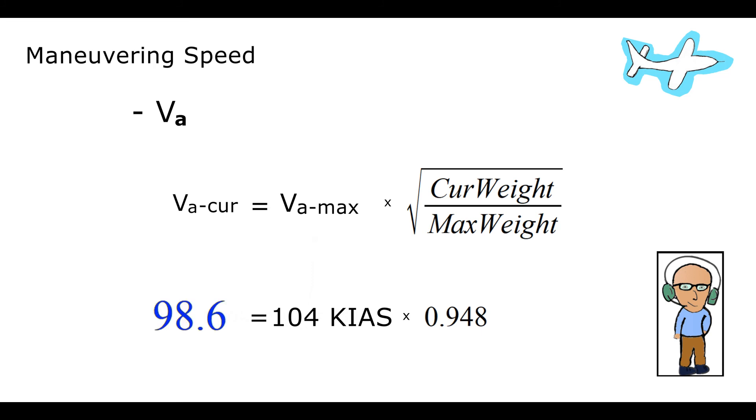The result is 98.6, which rounds up to a VA of 99 for a C152 at 1500 pounds.